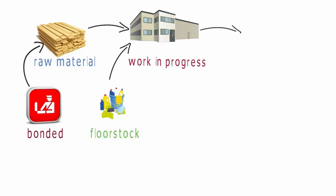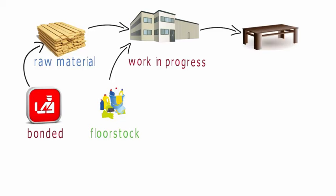Now that the table is finished, it is moved from the factory and stored in a warehouse waiting to be sold. Items ready to sell are referred to as finished goods inventory.